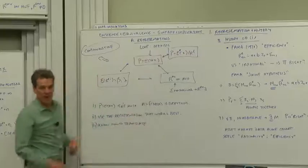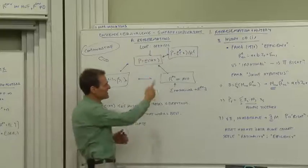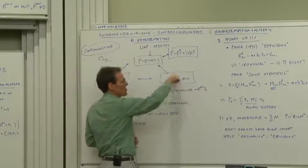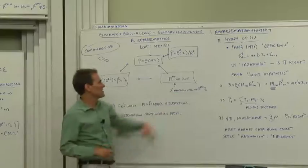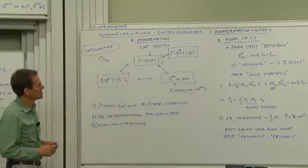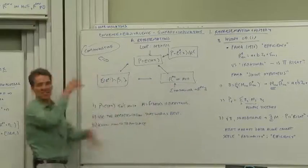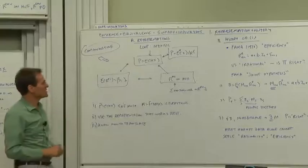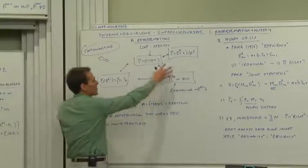We did some existence: the law of one price means there's some discount factor, or no arbitrage means there's a strictly positive discount factor. That's similar to how in order to construct a mean variance frontier, you need a non-singular covariance matrix so that you can invert it. That's the same thing really as the law of one price. So the existence theorems and the representation theorems just connect all these many different ways of looking at asset pricing and tell you what it takes for any of them to make sense.